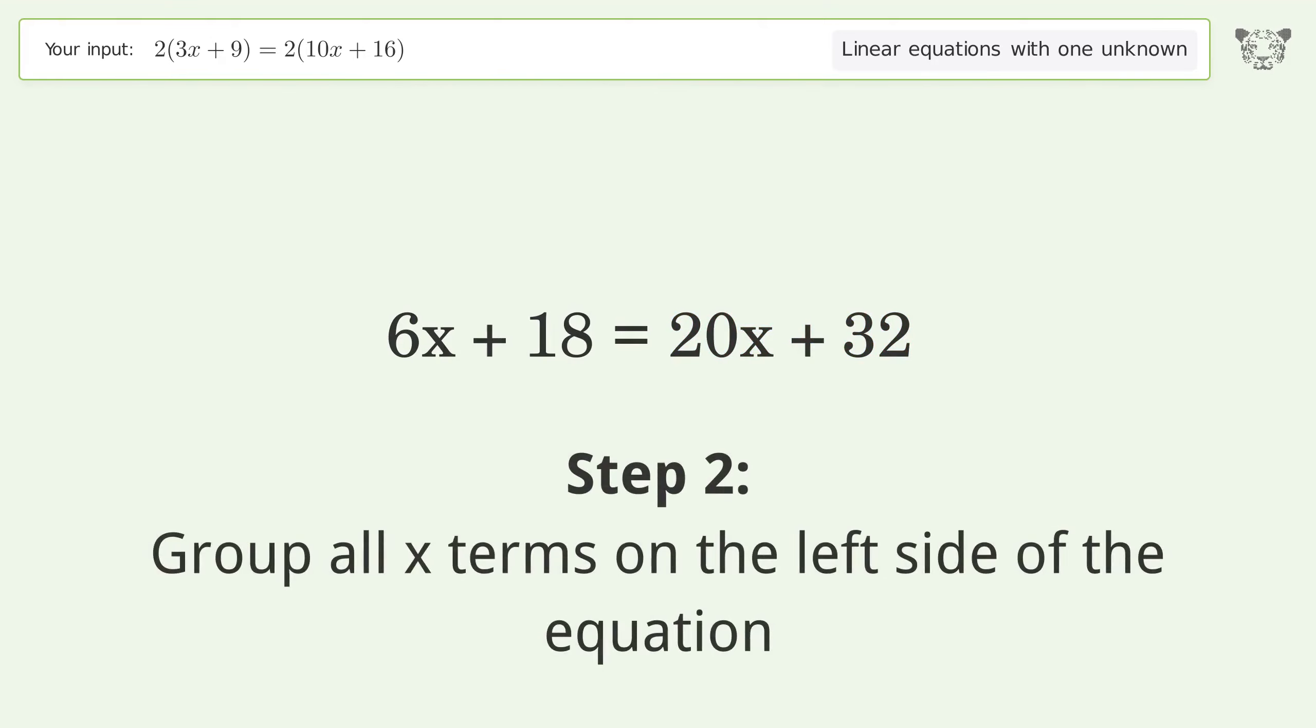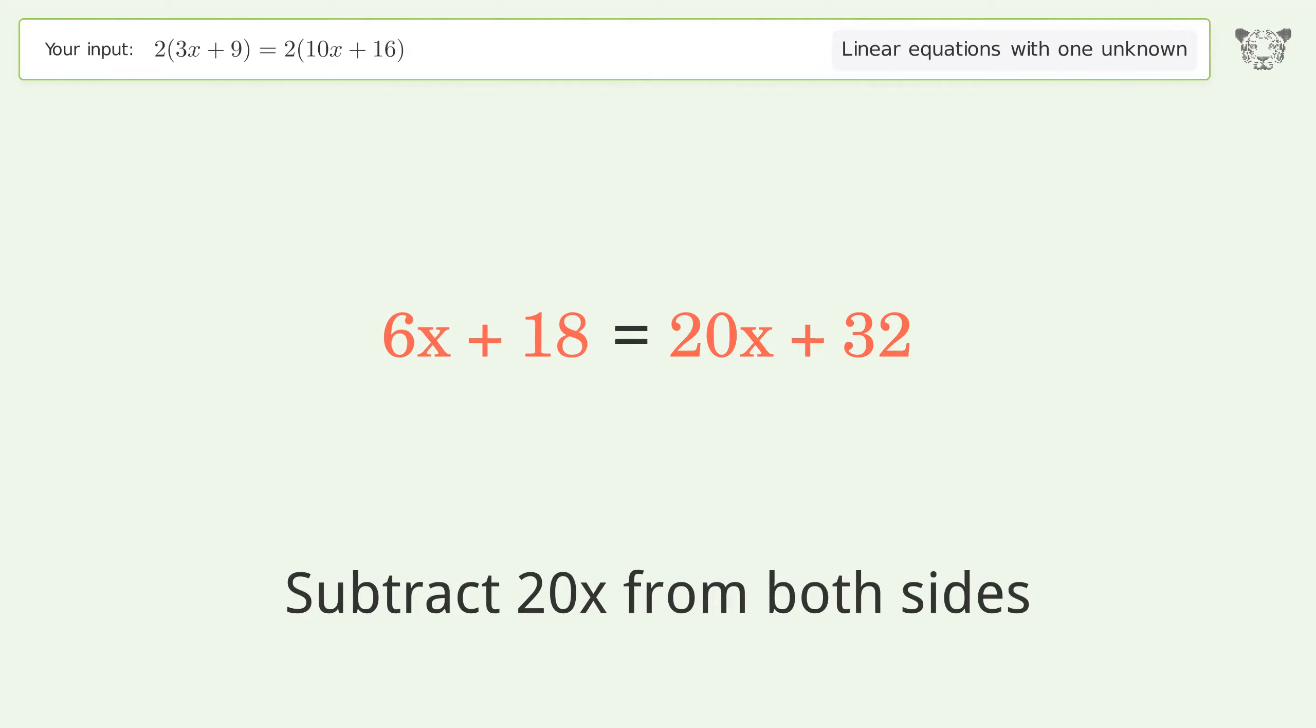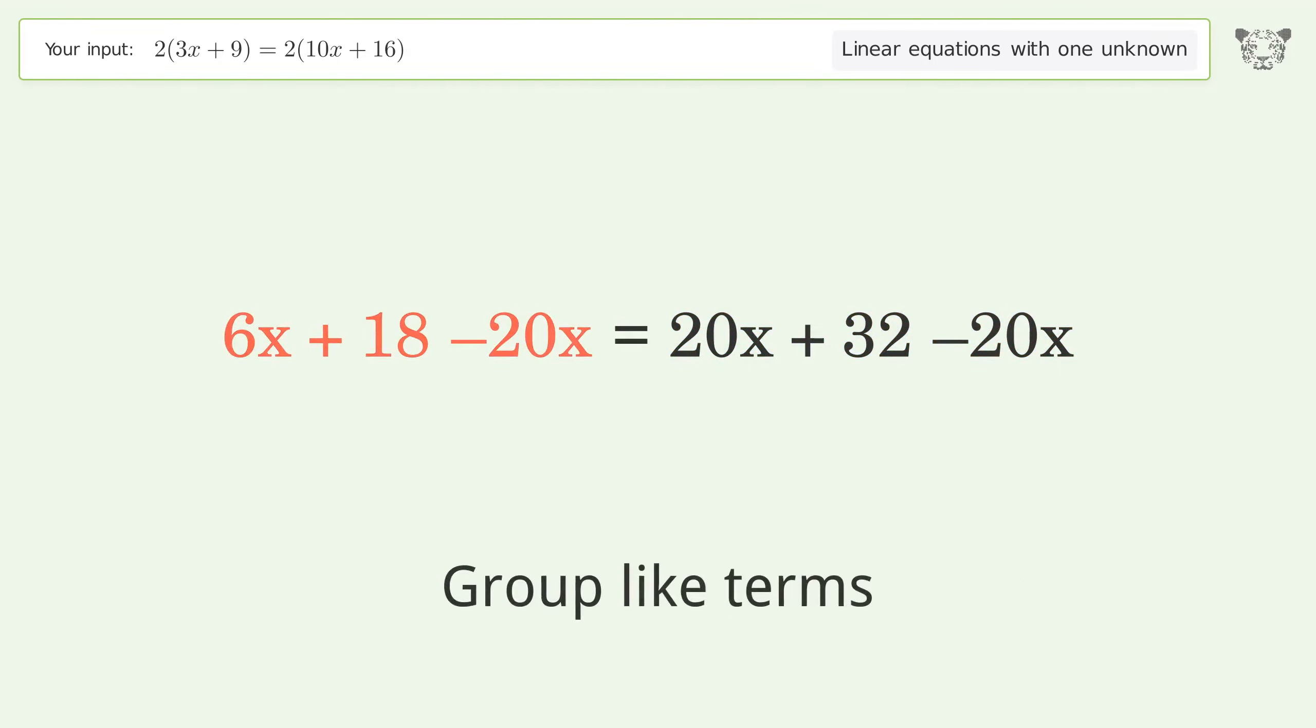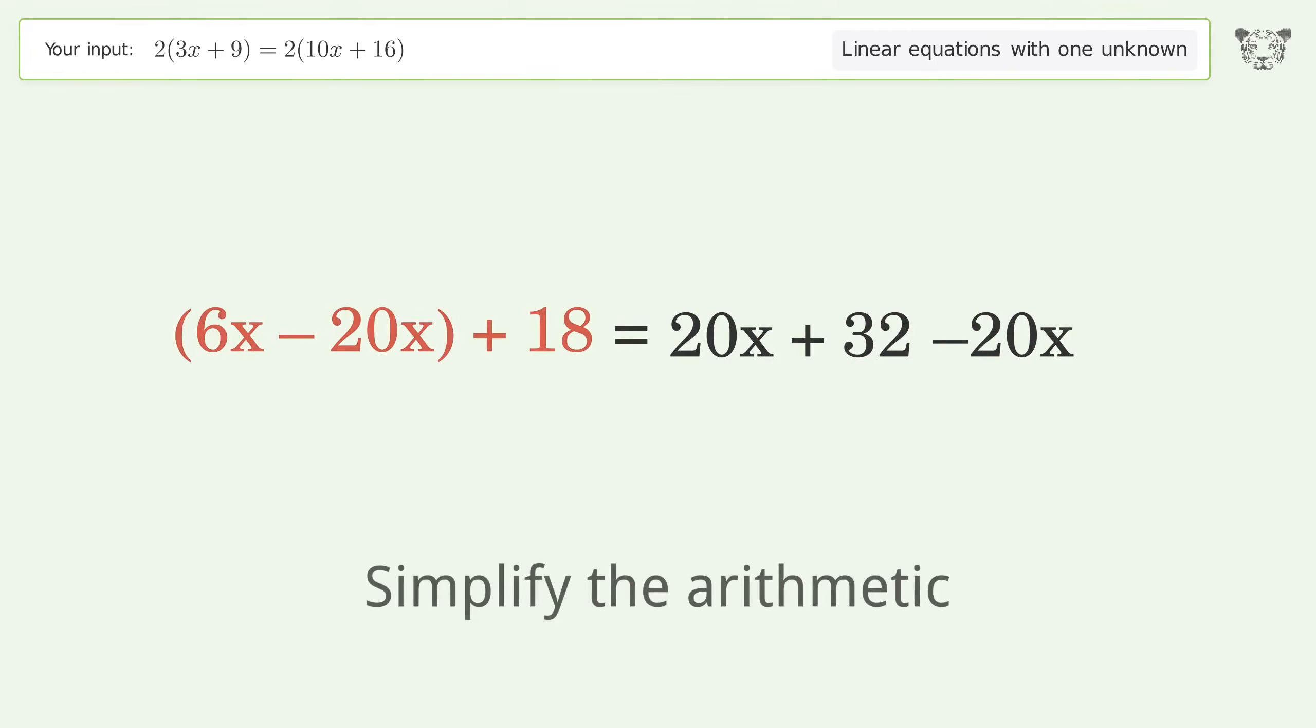Group all x terms on the left side of the equation. Subtract 20x from both sides. Group like terms, simplify the arithmetic.